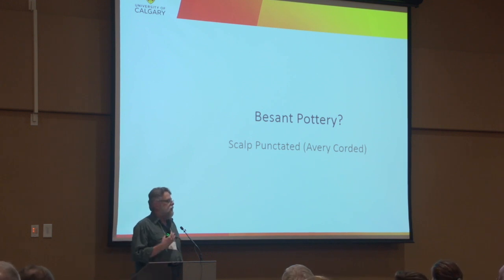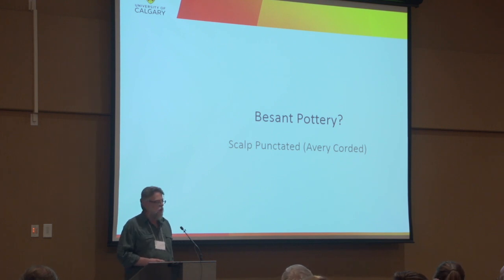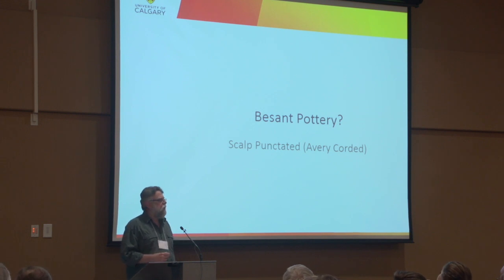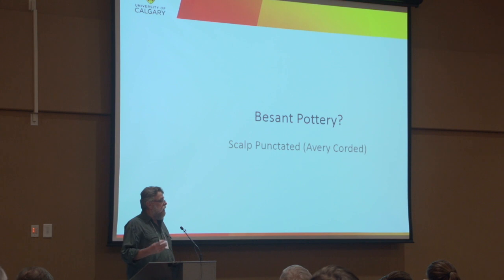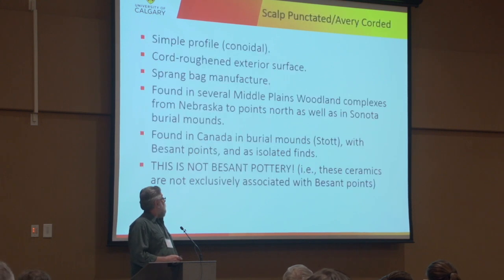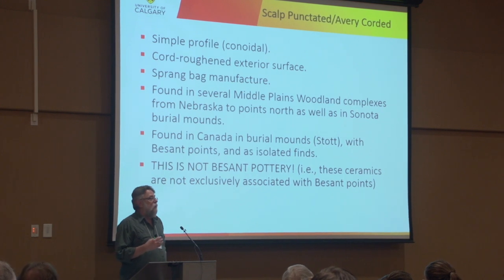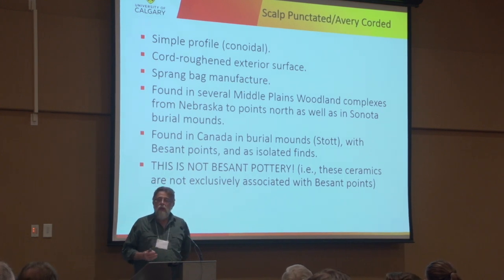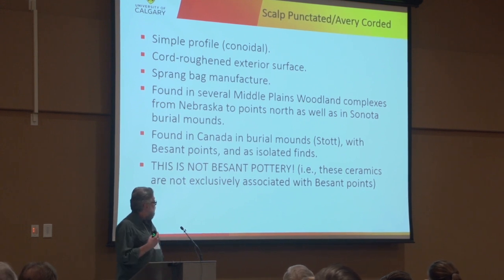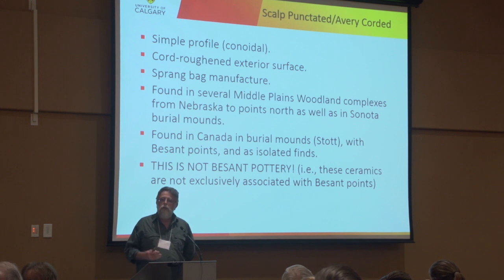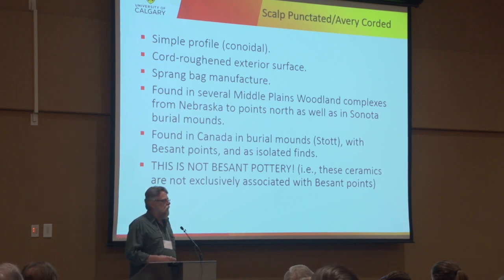In the case of ceramics associated with Basant points in Alberta, we just have a few crumbs of this and that and can't really do much to identify those. But further to the east, in Saskatchewan, we do have some pottery, and we can carry on with identifying that pottery in other areas. In fact, this pottery is found over a wide range of areas and times, beginning down in Nebraska in Middle Woodland areas.